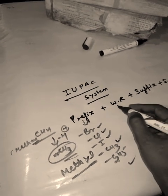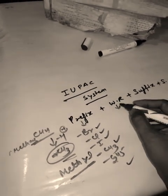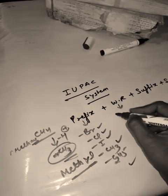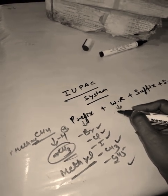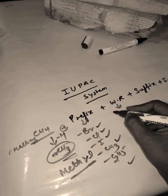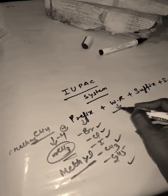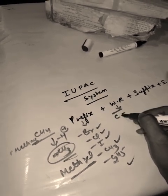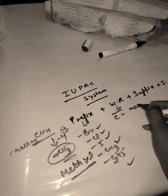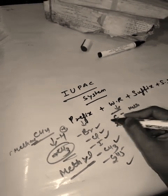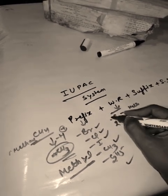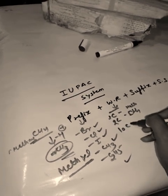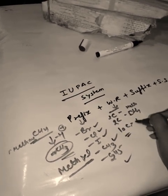The word root indicates the number of carbon atoms — the carbon chain length. For one carbon you add 'meth', for two carbons 'eth', and so on. For ten carbons (C10) you say 'dec'.